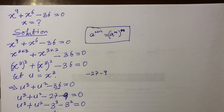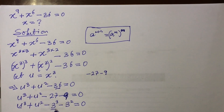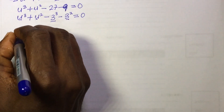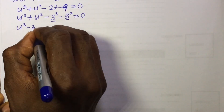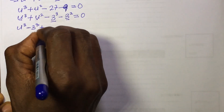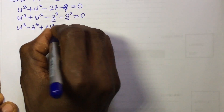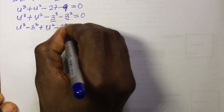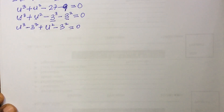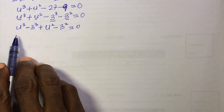We have u³ here and 3³ here, so we can group these together, and similarly group u² with 3². This gives us: (u³ − 3³) + (u² − 3²) = 0.